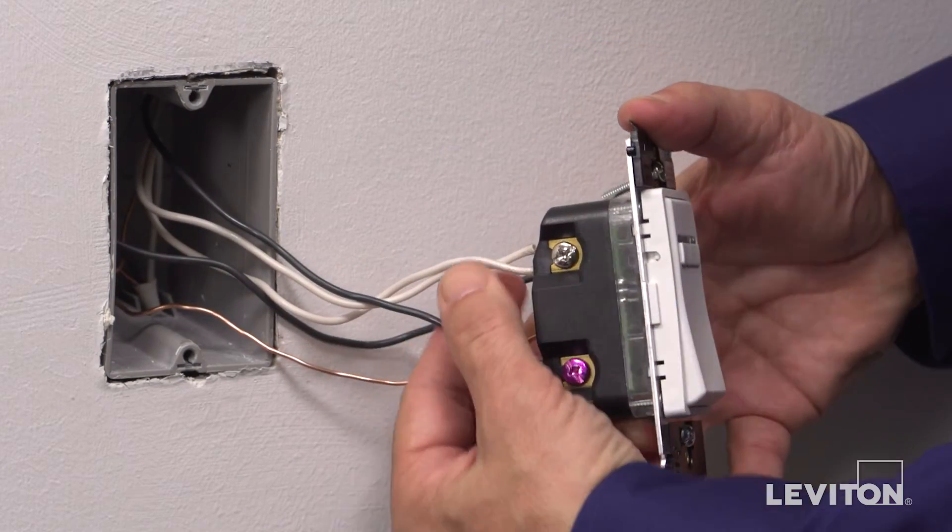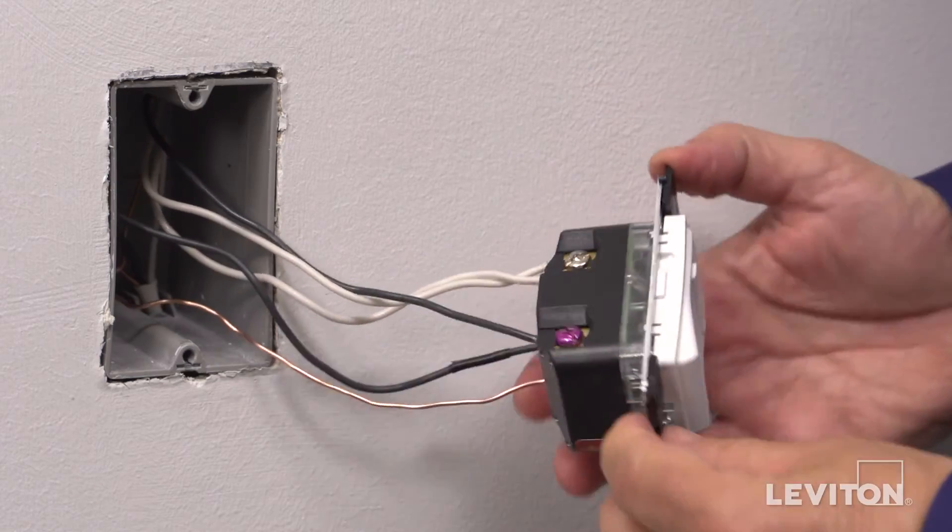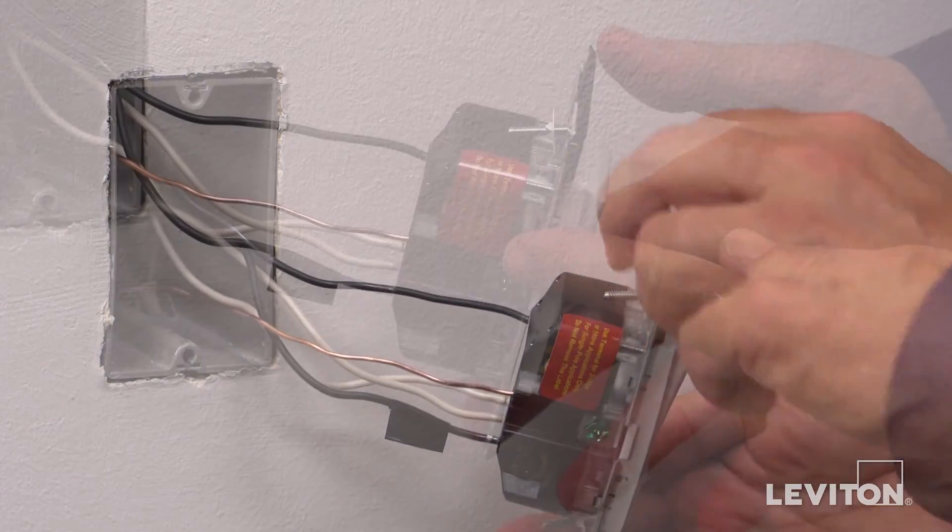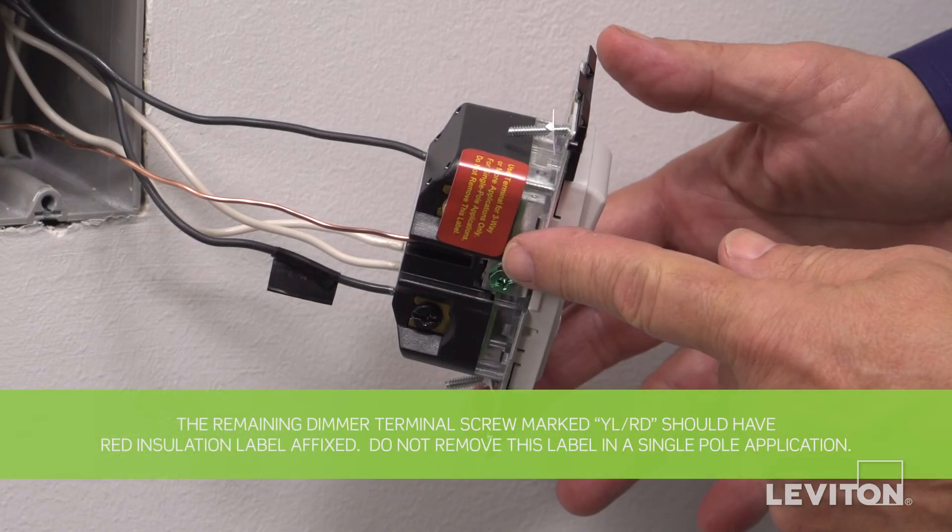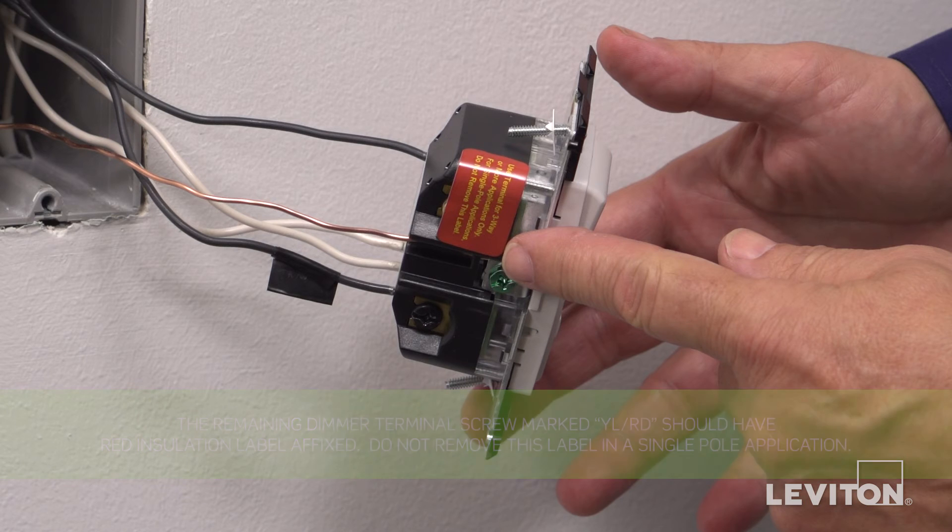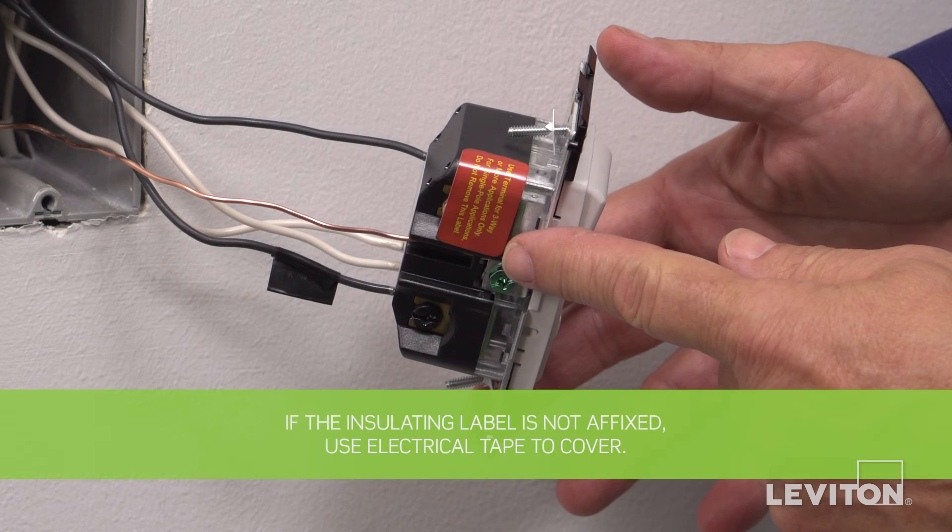Tug on all conductors to ensure termination is secure. Note, switch terminal screw marked YLRD should have red insulation label affixed. If insulating label is not affixed to terminal screw marked YLRD, use electrical tape to cover. The device is now terminated.